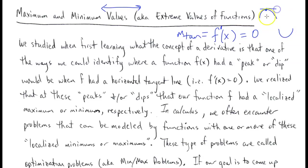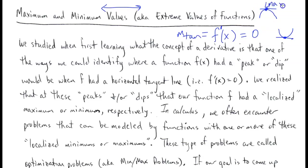Notice that this particular peak, if this is part of a function, has a horizontal tangent line right at the top, and for this dip we have a horizontal tangent line right at the bottom. This peak point is what we will call a local max, and this point is what will be called a local min or local minimum — also called a relative max.